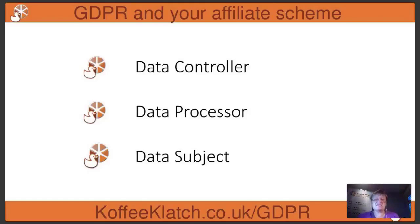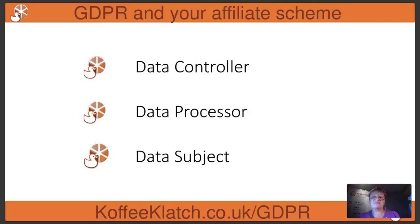In between those two roles is someone called the data processor. So if you use MailChimp, for example, to send out your mailing list, MailChimp is acting as your data processor, because they are collecting the data you ask people to give when they sign up to the mailing list — it's your mailing list even though MailChimp are processing the data for you. So when it comes to an affiliate scheme, the roles are quite specific and you can never really understand what's going on with your affiliate scheme if you don't get this bit straight.